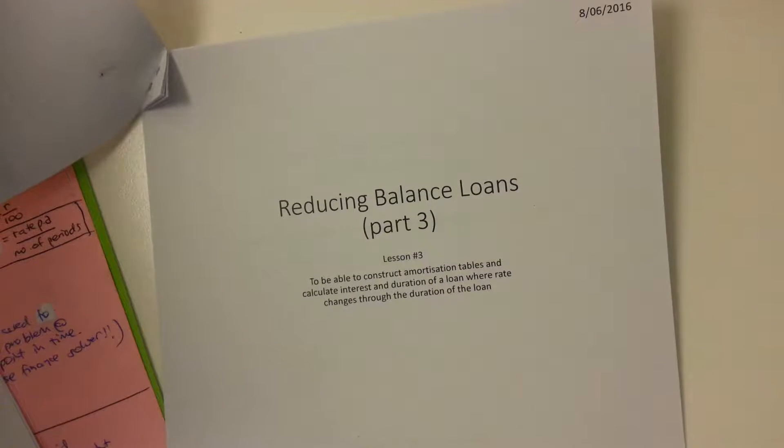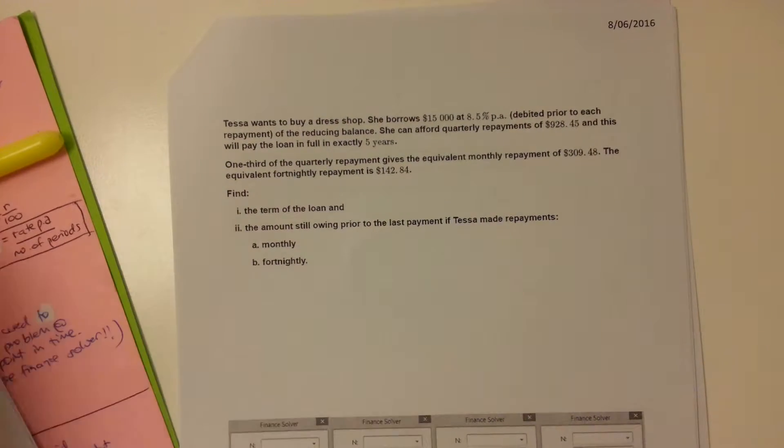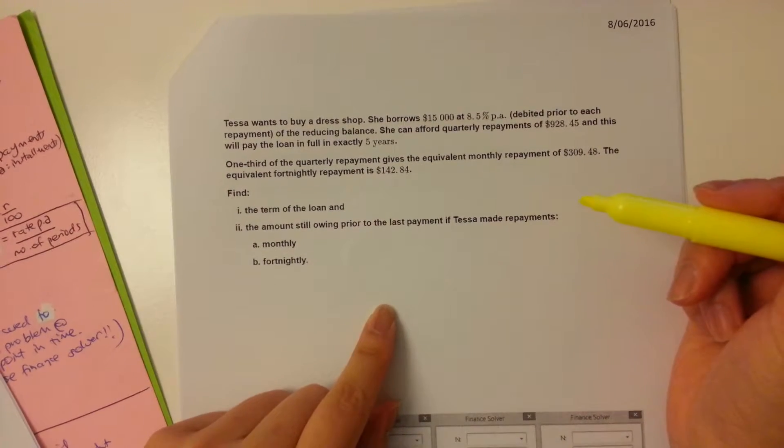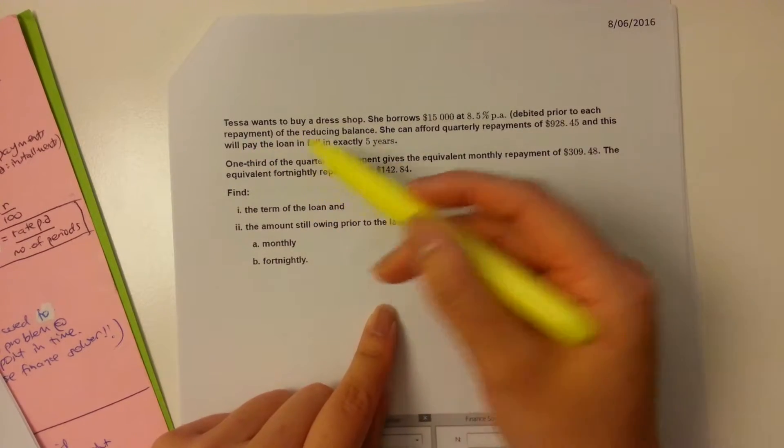Hi everyone, we are on Reducing Balance Loans Part 3 and I'm going to begin with Page 4 for this example right here. So I'm going to read the information and highlight important points as you should be doing when you're doing an exam question or a SAT question as well. So she wants to buy a dress shop,